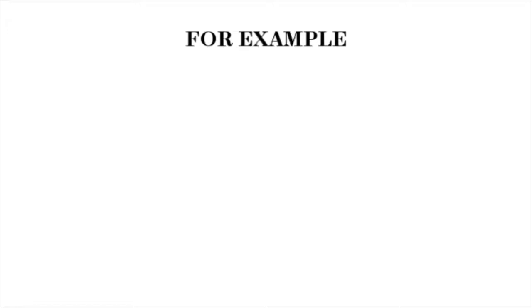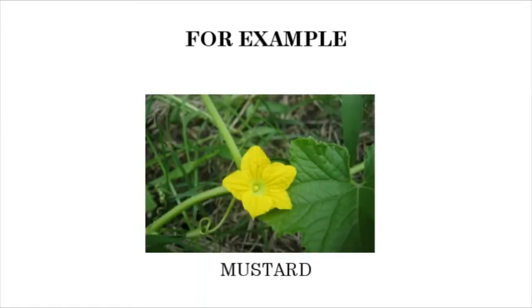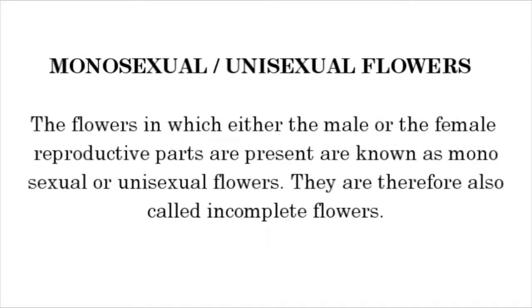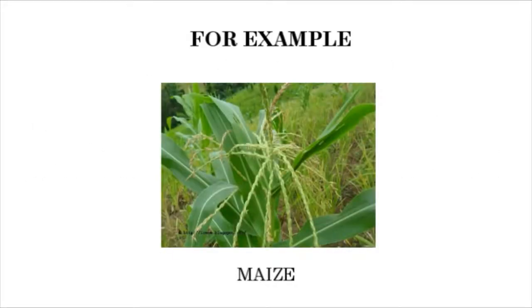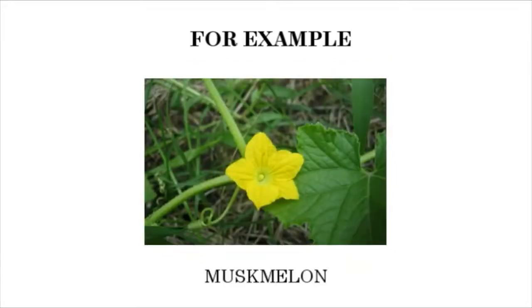For example, Hibiscus, Mustard and Daffodil. Monosexual or Unisexual flowers: the flowers in which either the male or the female reproductive parts are present are known as Monosexual or Unisexual flowers. They are therefore also called incomplete flowers. For example, Maize, Bitter Gourd and Musk Melon.